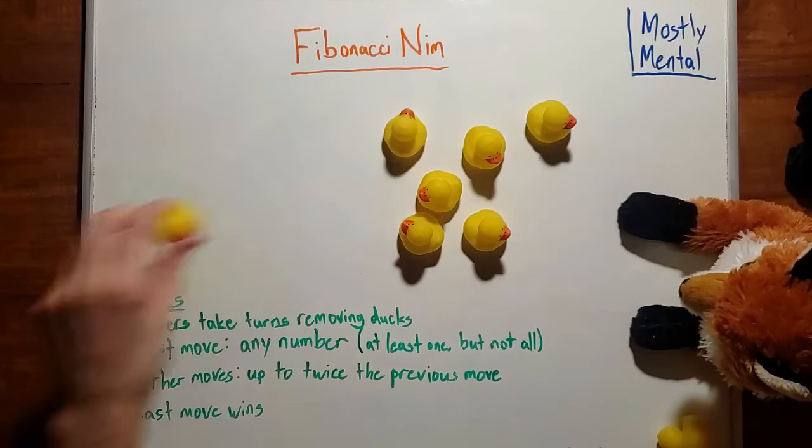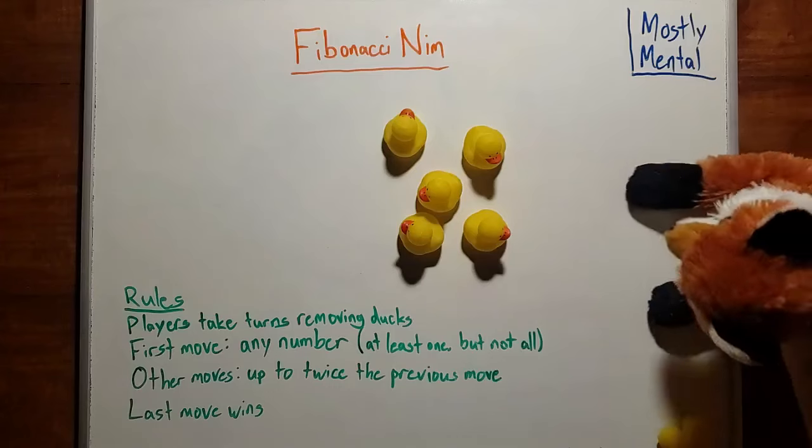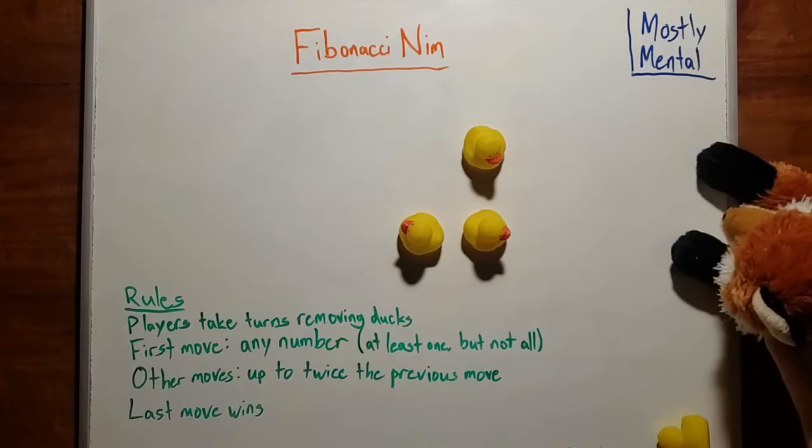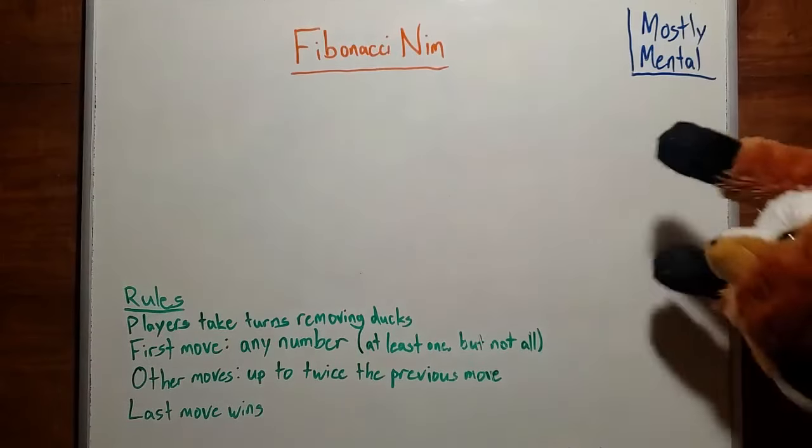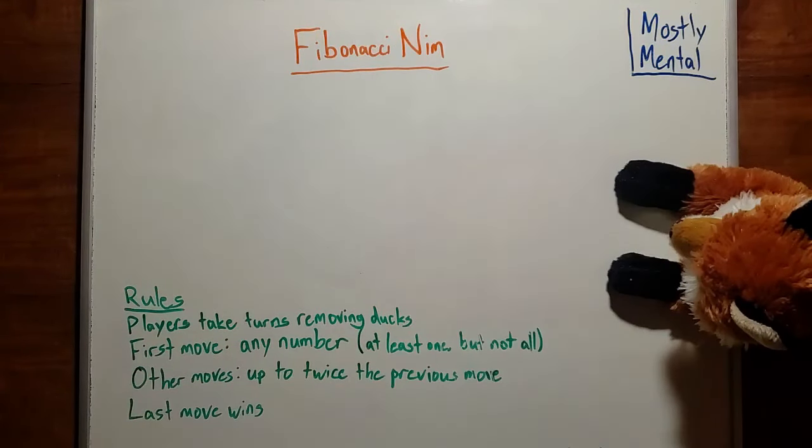Then I could take 2, and Aurora would take another 1. Then I could take 2 more, and Aurora would take the rest and win. Good game. I'm getting tired of losing these games, so I'll need a better strategy.